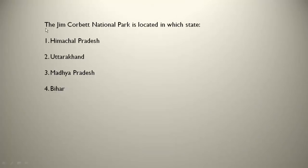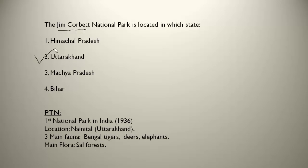The Jim Corbett National Park is located in which state? Jim Corbett is a very, very important one. It is located in Uttarakhand. It is the first national park in India, established in 1936. Its location is in Nainital district. The main fauna are Bengal tigers, deer, and elephants — Bengal tigers are found in large quantity here. The main flora is sal forest. Please remember: the oldest national park in India is Jim Corbett National Park, in Uttarakhand.